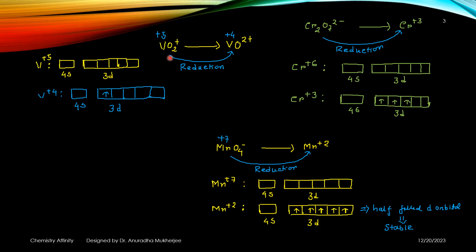When VO2+ reduced to VO^2+, plus 5 oxidation state becomes plus 4 oxidation state. And in plus 4 oxidation state, vanadium has 3D1 electronic configuration.